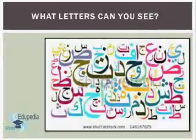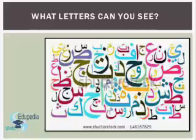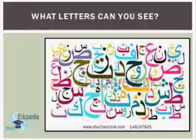Can you say the letters you know in this picture? Once you mention a letter, say one word that begins with it. We have A as Arnab, which is rabbit. We have B, Bata, duck. We have T as Taj, crown.